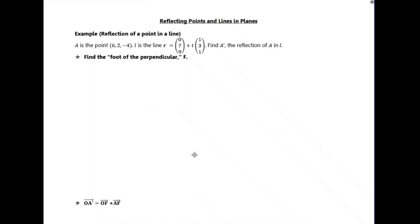The first question asks us to reflect a point in a line. Visually, here we've got a straight line and a point A on one side of the line. If we reflect it in the line, it goes over to a point — the image of A, which I'll call A dash. Point A will be equidistant from the line to A dash, and the line between A and A dash will cross the line at a right angle — it will be perpendicular to the line.